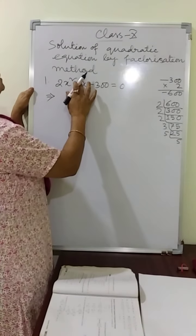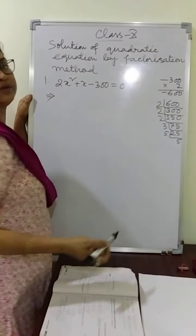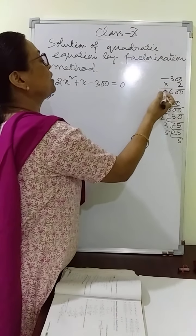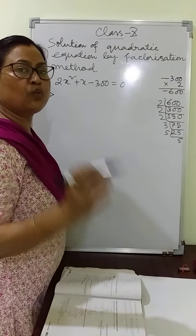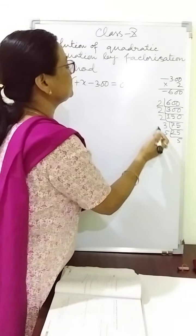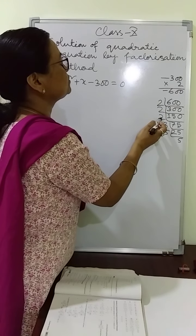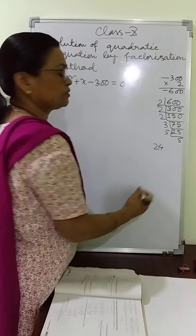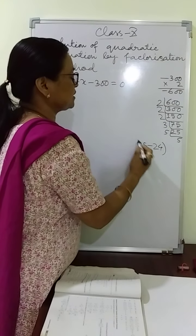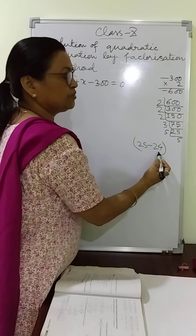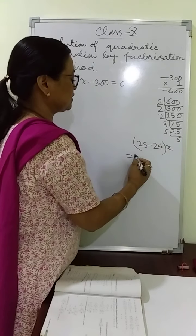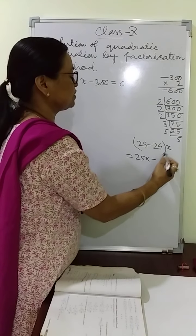Now let us see how to get 1. There is a minus sign. As I told you in the previous class, in case of factorization, if the product is minus, then one factor is minus and the other is plus. So we look at 25 and 24: 25 minus 24 gives 1. So you write 25x minus 24x.